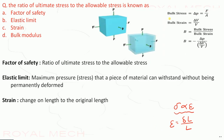Bulk modulus is bulk stress upon bulk strain. Bulk stress is force upon area. Bulk strain is change in volume to the original volume, expressed as ΔV/V. The negative sign is due to the compressive nature of the force applied. So bulk modulus equals bulk stress upon bulk strain.